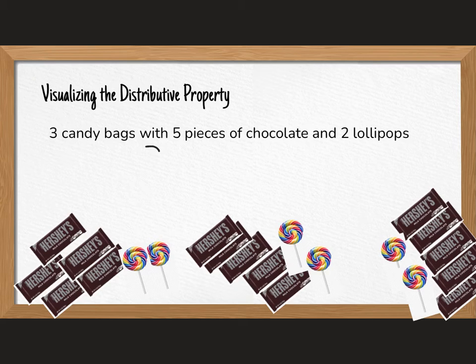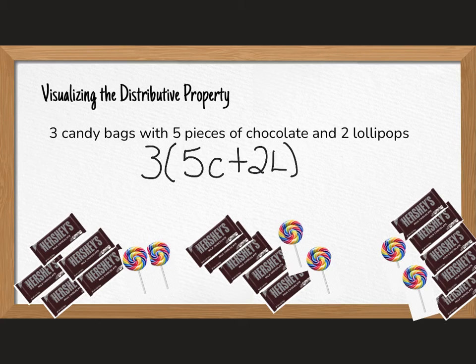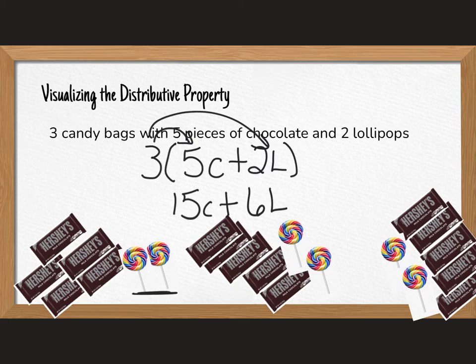And you can see that we would have 15 pieces of chocolate and six lollipops. So mathematically, this would look like I have three bags of five pieces of chocolate plus two. And I'm gonna use a capital L for lollipop because the lowercase l looks like a one. So and then to simplify this, we would say three groups of five is 15 chocolates plus three groups of two lollipops is six lollipops. And we can see that here in our example.